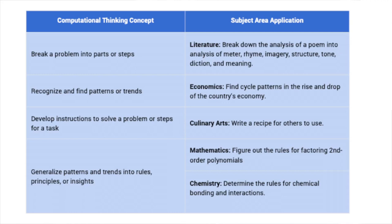Let's look at this with subjects, because I know it's very abstract. Taking a problem and breaking it into smaller parts — in literature, that means breaking down the analysis of a poem into meter, rhyme, imagery, structure, tone, diction, and meaning. These are things we're already doing in schools when we learn poetry, and that's also computational thinking — breaking down a problem into smaller pieces.